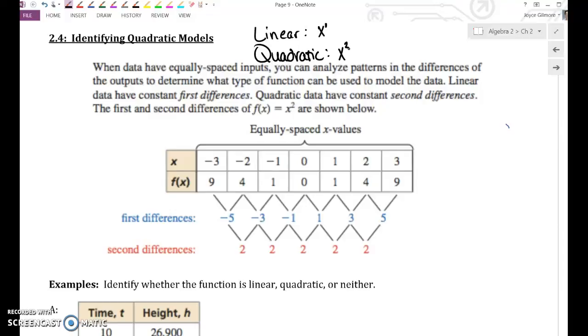When we look at the y values, we're going to find the differences in the y values. So you can either do the second y value minus the first one. So in this example, 4 minus 9 is negative 5, 1 minus 4 is negative 3, 0 minus 1 is negative 1. Or you can think of it as 9 to 4, how do you get from 9 to 4? You subtract 5. How do you get from 4 to 1? You subtract 3. That is called the first level of differences. If the first level of differences are constant, then the function is linear.